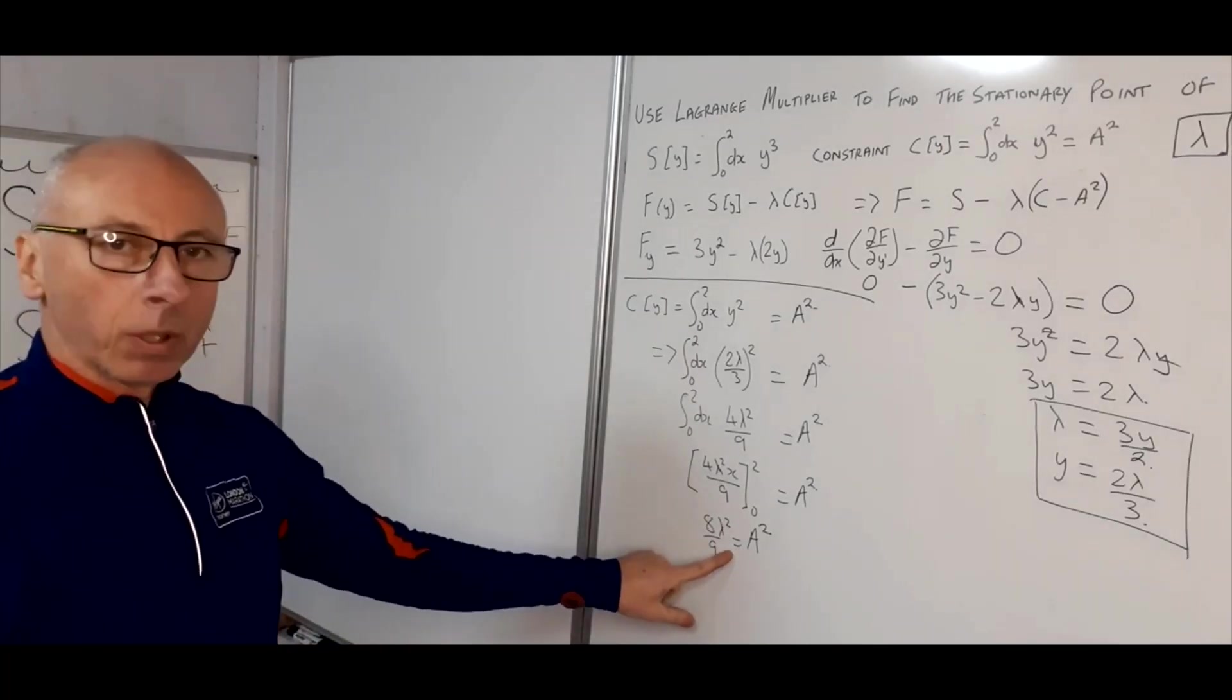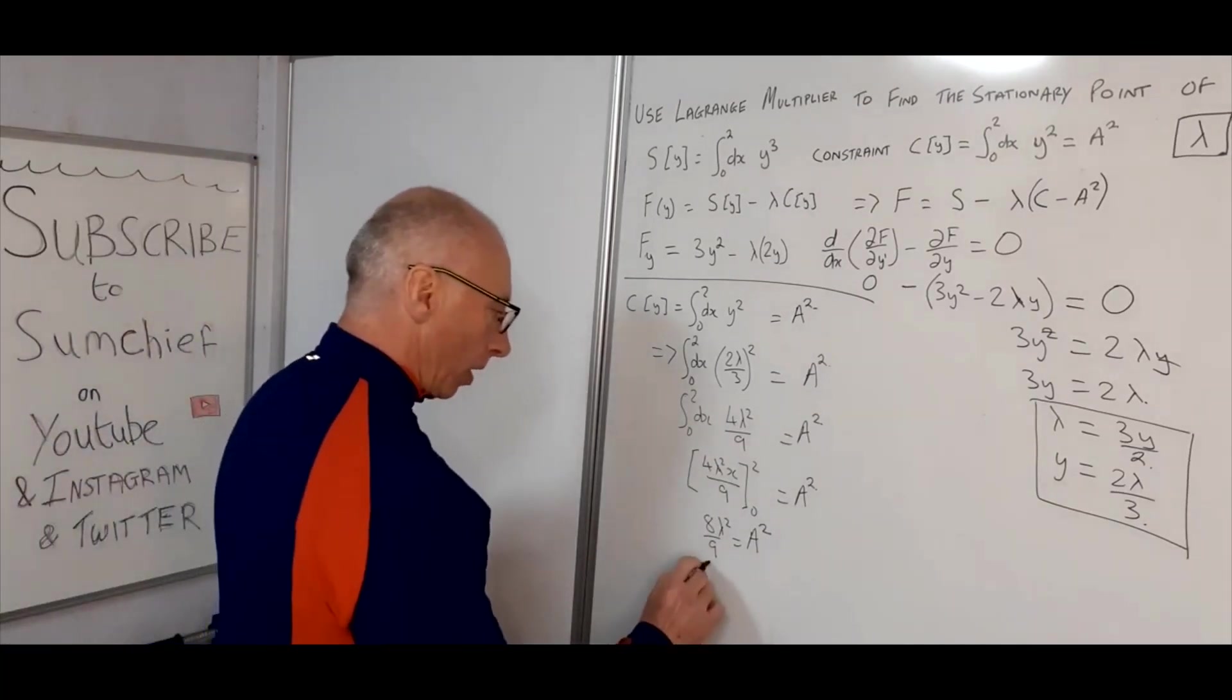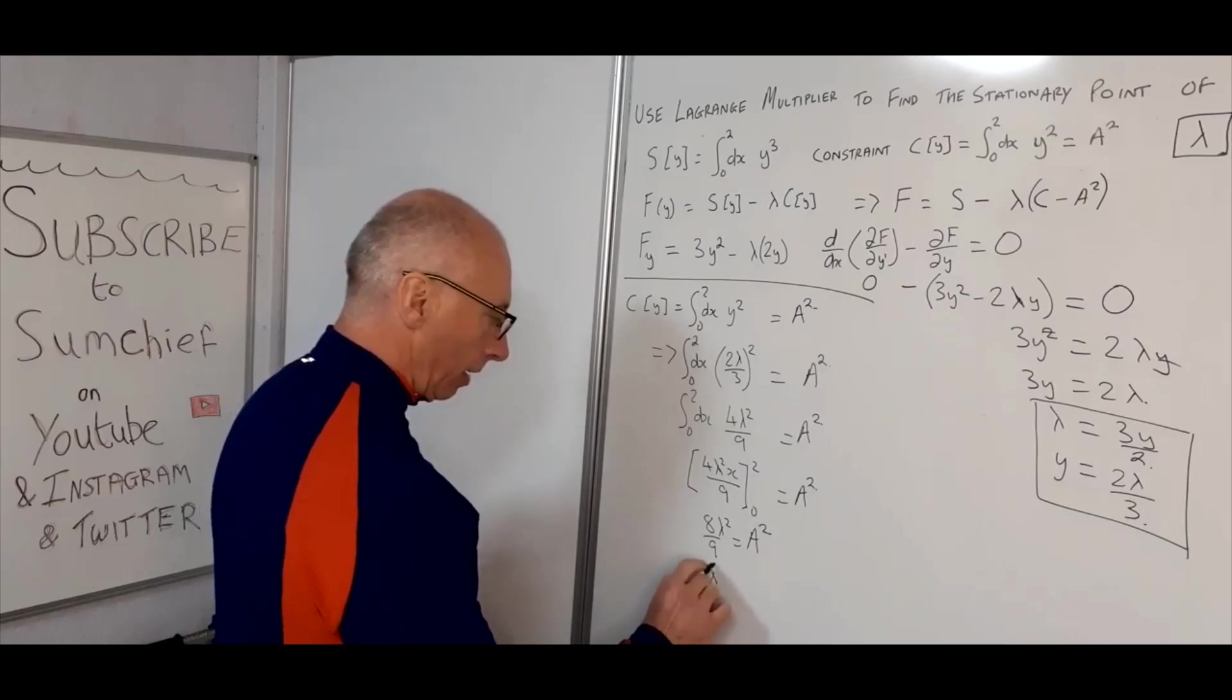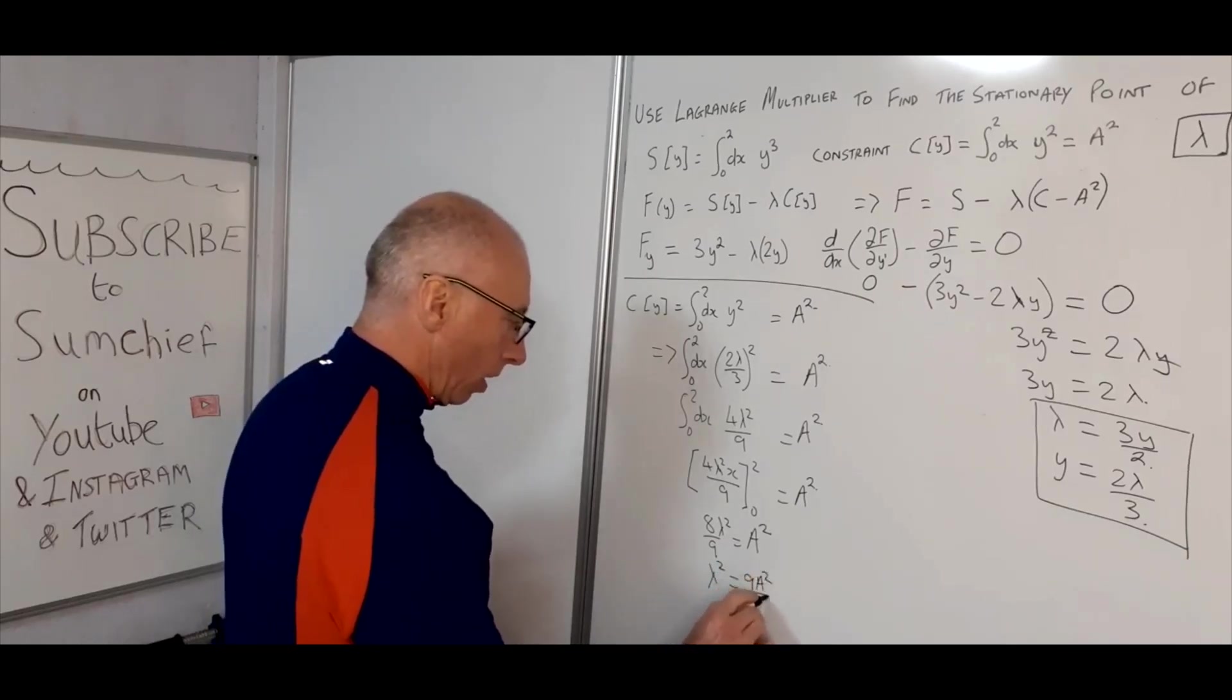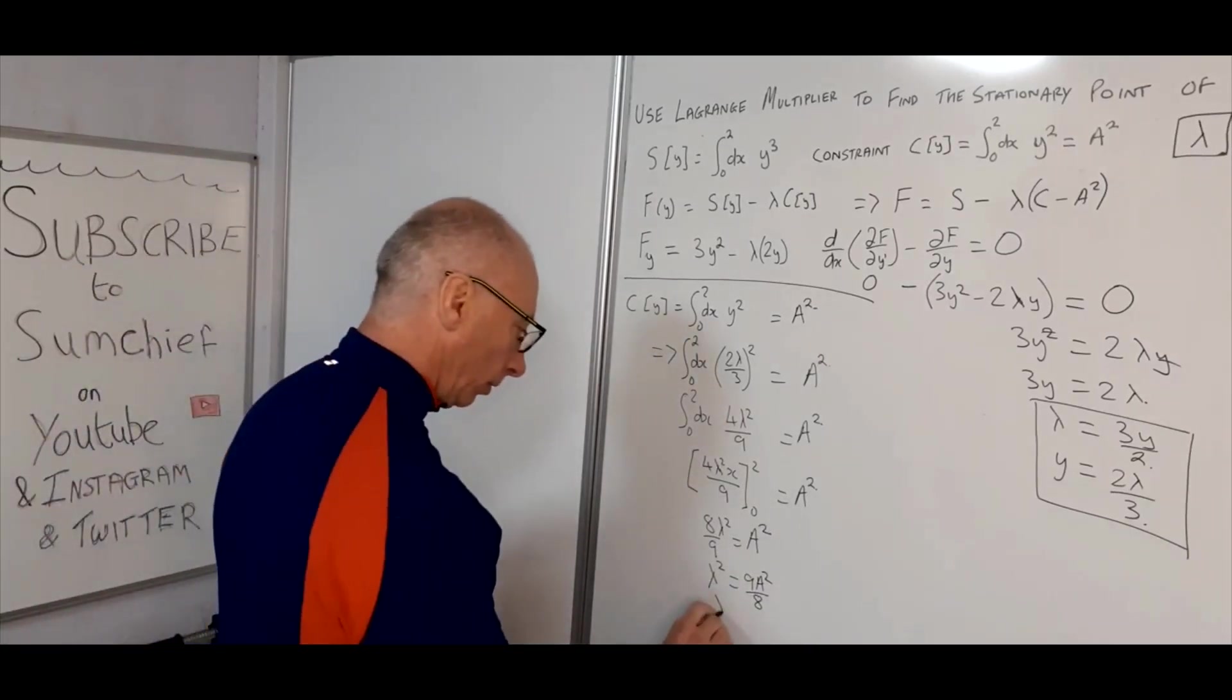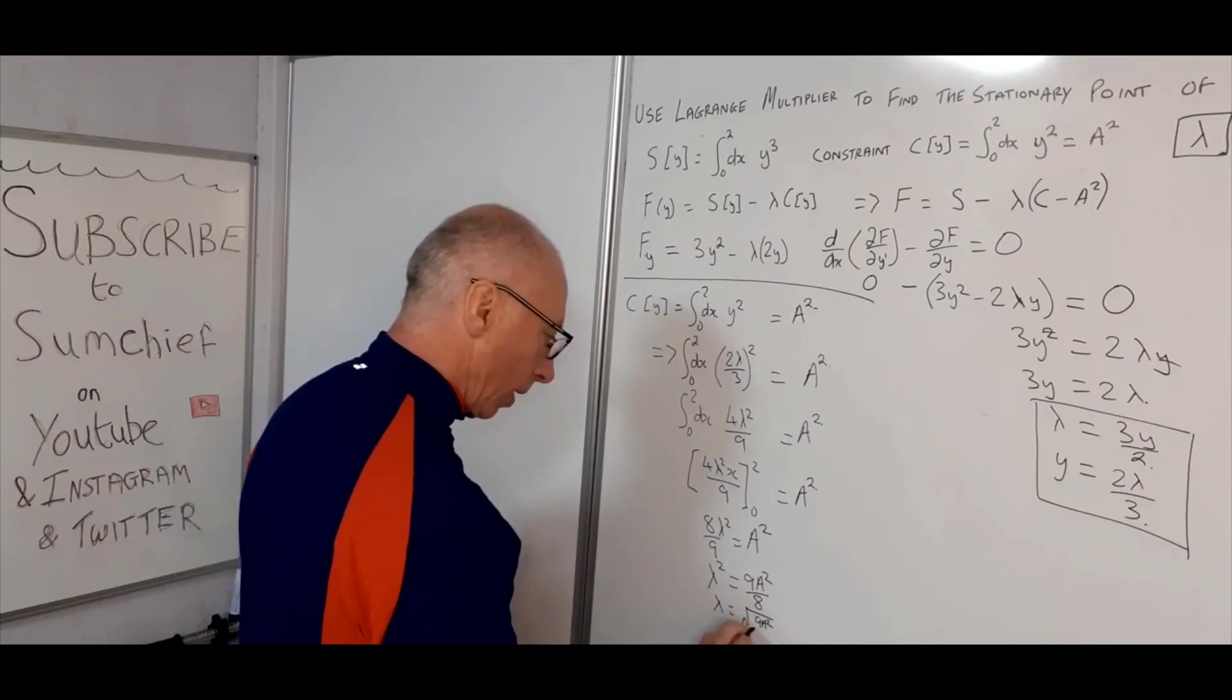So now to try and get lambda on its own. So now we've got multiply both sides by 9 over 8. We'll then get lambda squared equals 9A squared over 8. So then lambda will equal the square root of 9A squared over the square root of 8.